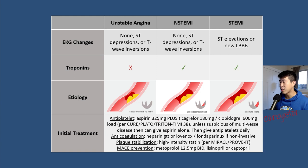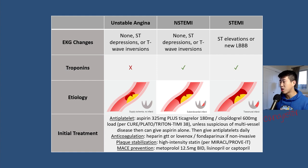After loading, give aspirin 81 mg daily and ticagrelor 90 mg twice a day. The difference between ticagrelor and clopidogrel is that ticagrelor is already the active drug, whereas clopidogrel is a prodrug. Ticagrelor has better outcomes, but clopidogrel, also known as Plavix, is much cheaper, so many patients are on Plavix after discharge.